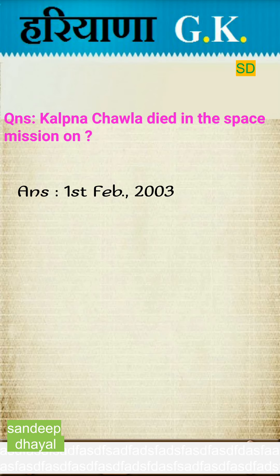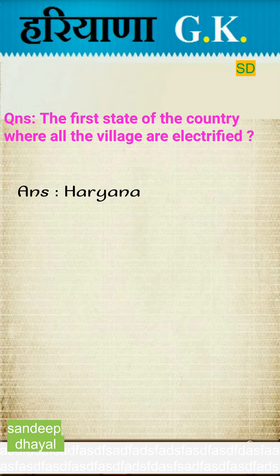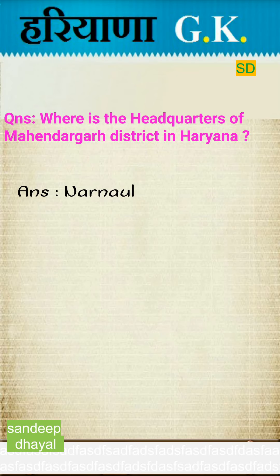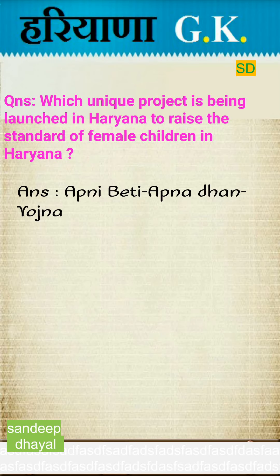Kalpana Chawla died in the space mission on 1st February 2003. The first state of the country where all the villages are electrified is Haryana. Where is the headquarters of Mahendragarh district in Haryana?